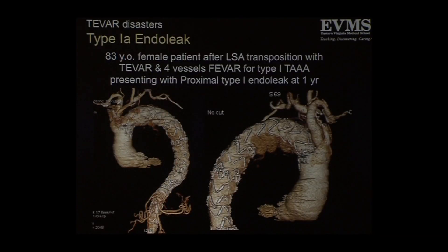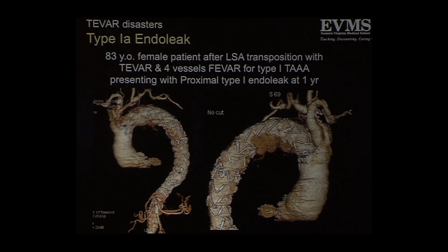This is a very frustrating patient — a patient with a type 1A endoleak. This is an 83-year-old female patient with a subclavian transposition with a TVAR, as well as a four-vessel back-table FEVAR, done for a type 1 thoracoabdominal aneurysm. You would think that after all of that, if she's going to have a leak, it's going to be down at the bottom where I've got the four-vessel FEVAR. But that's actually not the case. A year later, she presents with a type 1 endoleak in the arch again.